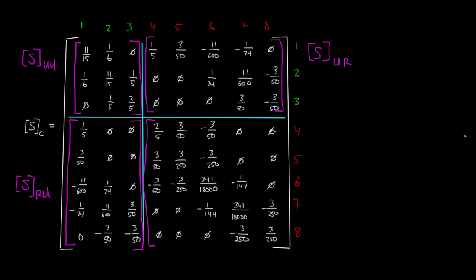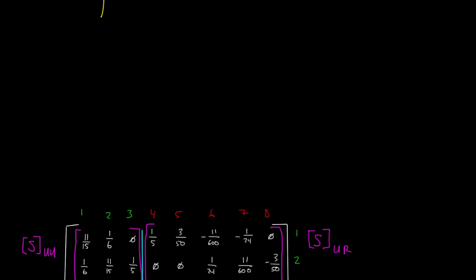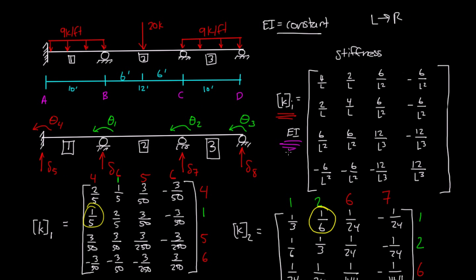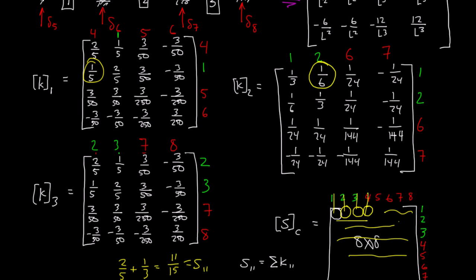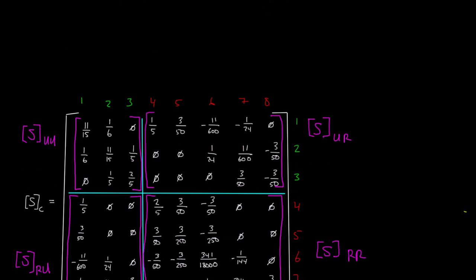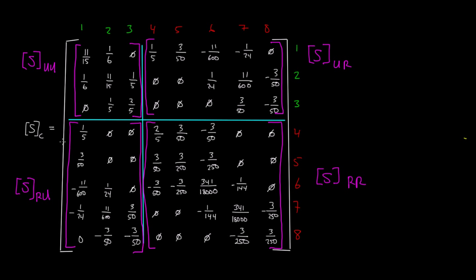And then finally, this matrix here is going to be S sub RR for restrained rows, restrained columns. So this is our S sub complete matrix. In each of these four matrices, since they were all K values and we pulled out an EI for the K values, EI is pulled out of all these K matrices. So each one of these matrices, we can pull out an EI from.